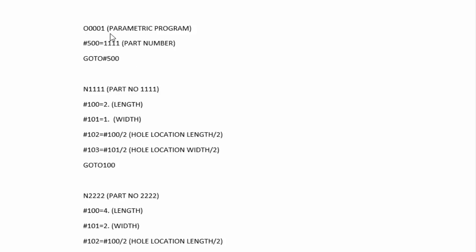At the top of the program we start with program number 1, called the parametric program. We load variable #500 with our part number — either 1111, 2222, 3333, or 4444. This is the only number we need to change to have the program run any one of those four parts. The next statement uses GOTO #500, which in this case is loaded with 1111, so it looks for N1111.